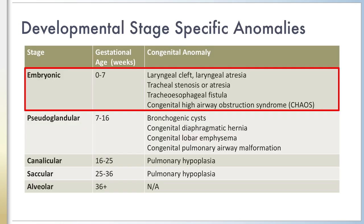Specific congenital anomalies occur as the fetal lung develops. During the embryonic phase, as the lung buds begin to grow from the primitive foregut, aberrant fetal development can lead to anomalies of the upper trachea and larynx. CHAOS, or Congenital High Airway Obstruction Syndrome, is a rare anomaly that is secondary to obstruction of the upper trachea or larynx.